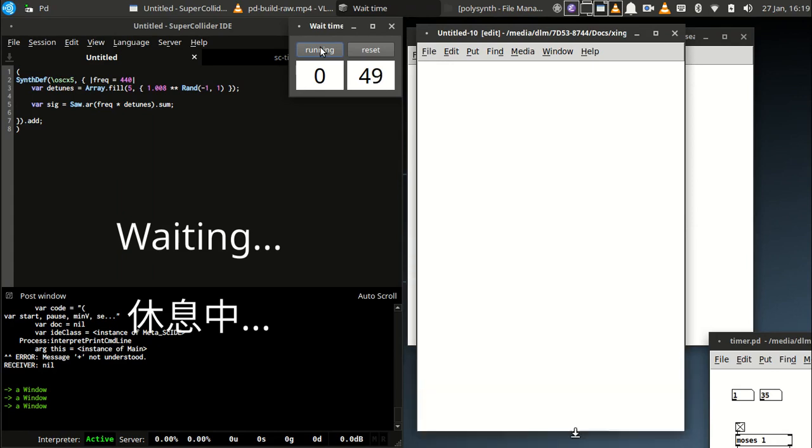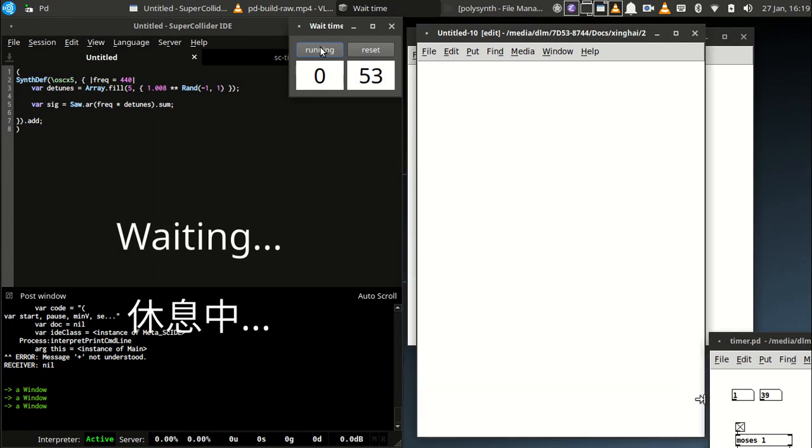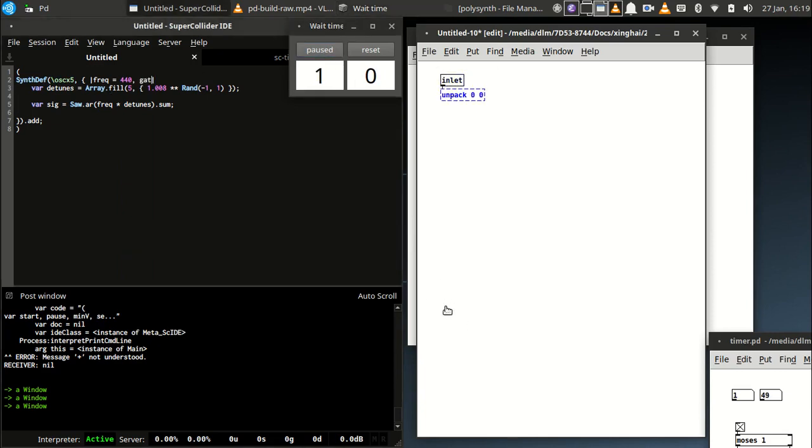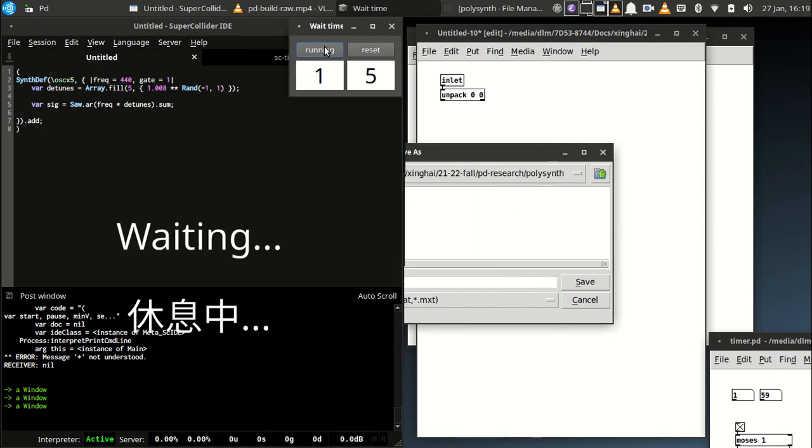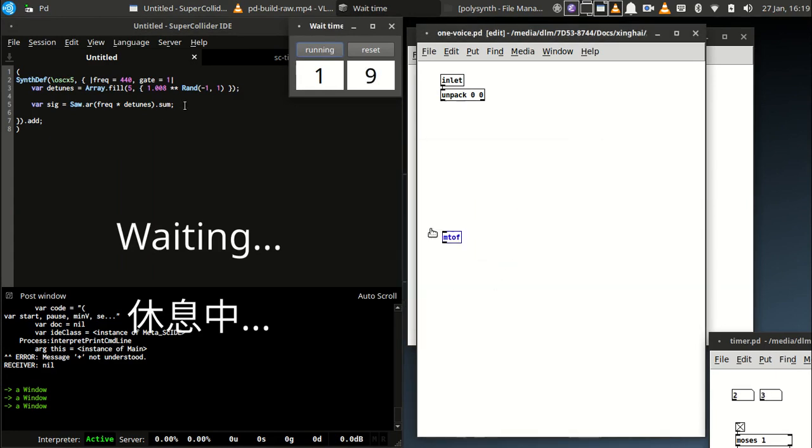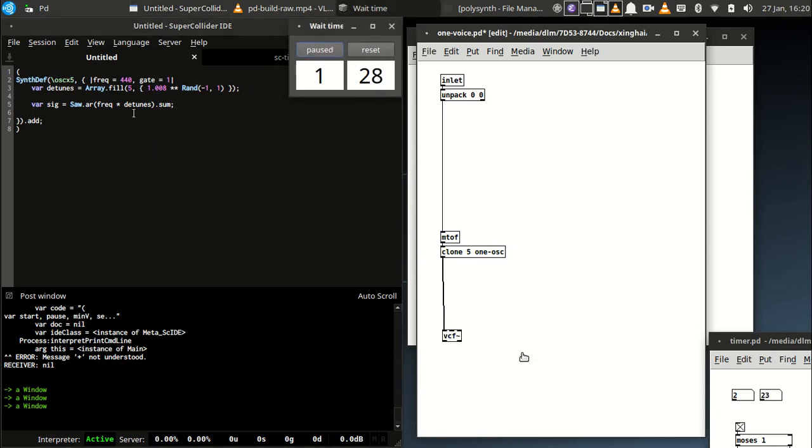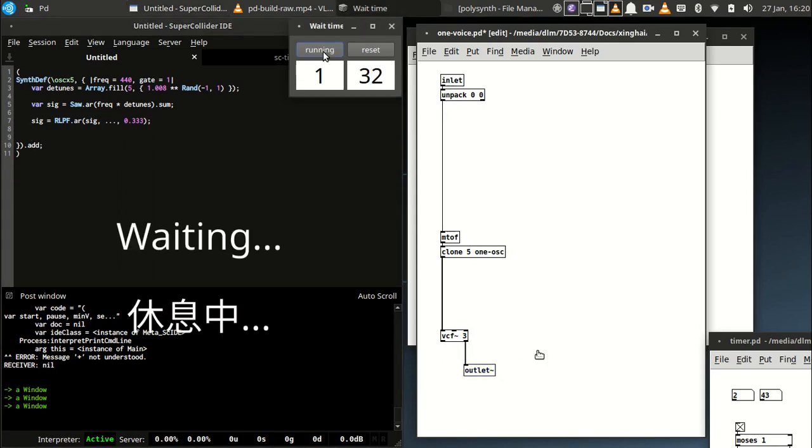So inside the first window on the right, there is the oscillator and the random detuning. Now this side is going to first use the single oscillator within a clone object to make five of them. So that's the five times duplication. There is the filter being added. And on the SuperCollider side, we're using a resonant low-pass filter, Pure Data using VCF.